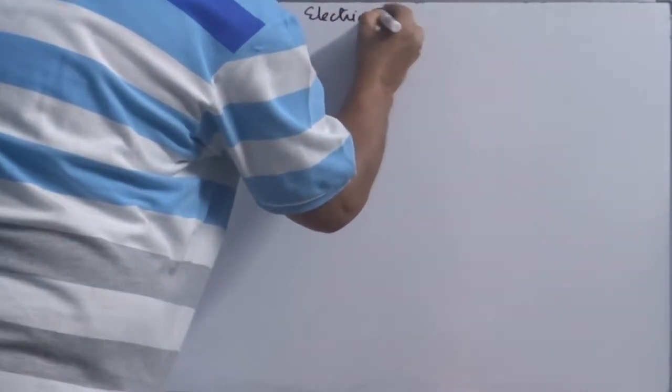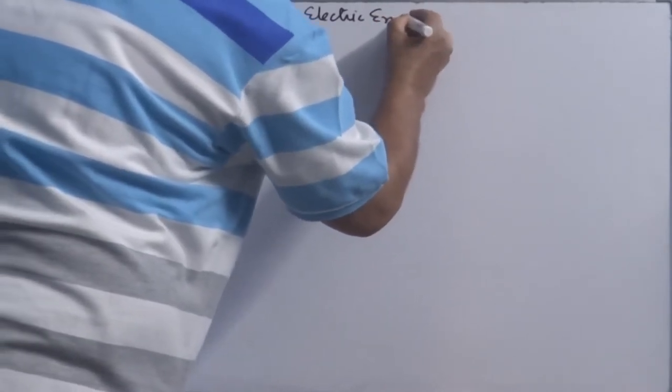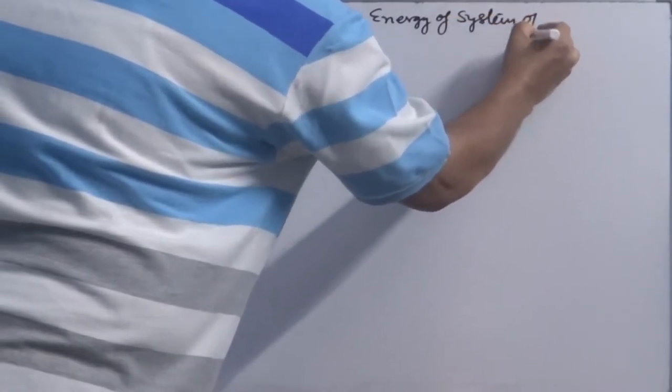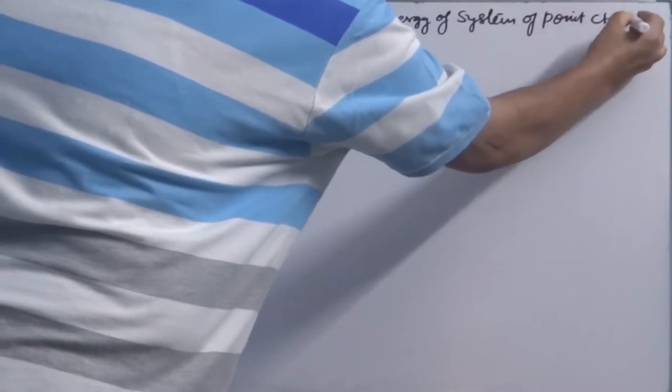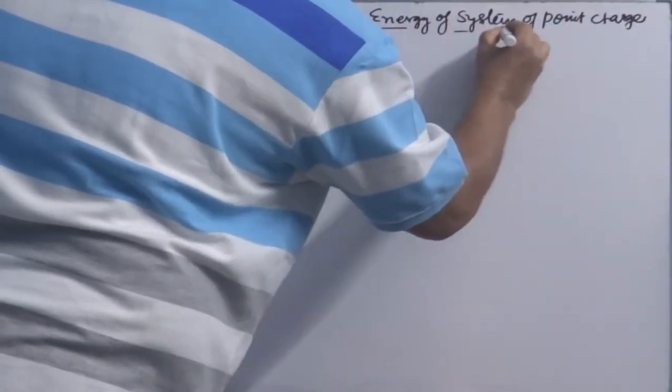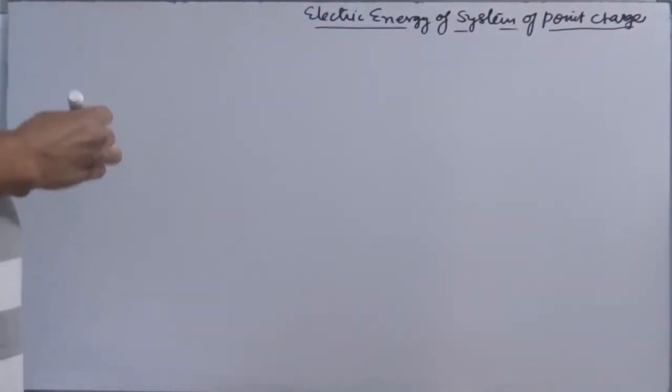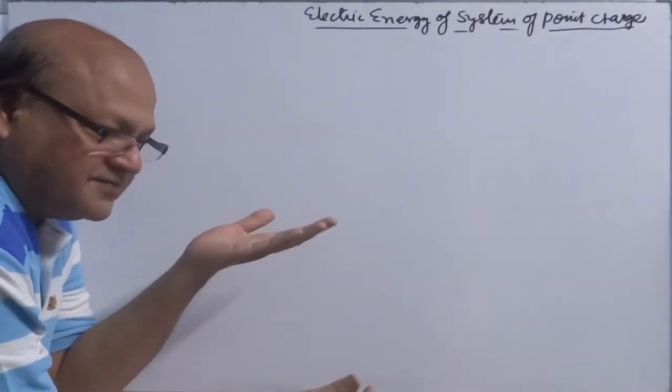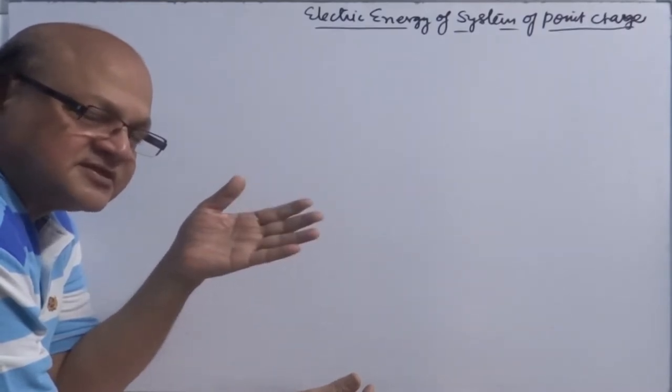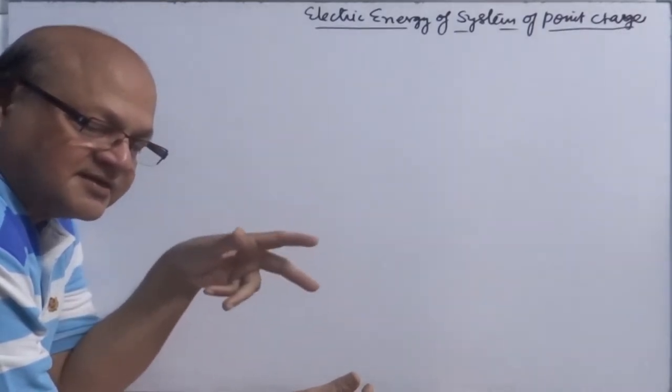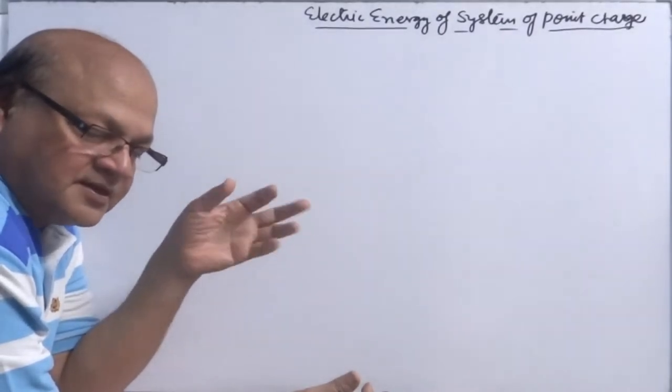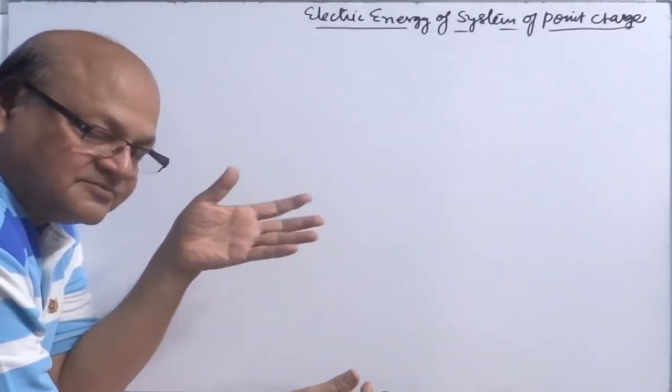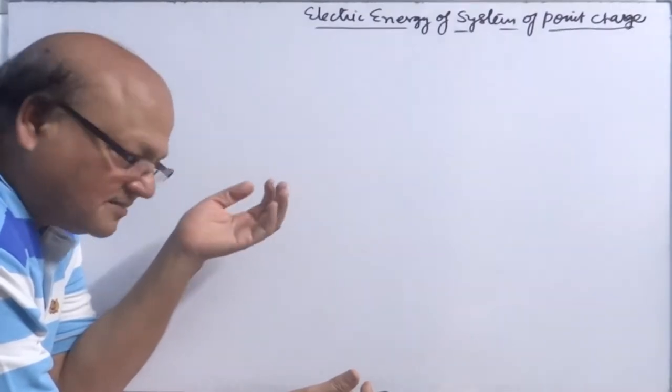Electrical or electric energy of system of point charges. What do I mean with system of point charges? When large number of point charges are brought together we form the system. For example, if we have three charges, we can keep these three charges at the vertices of a triangle. It becomes a three-point charge system. If we keep four point charges at the corners of a square or rectangle, it becomes a four-point charge system.